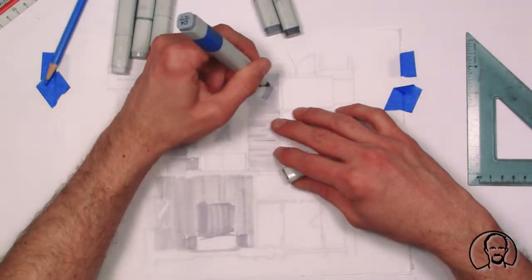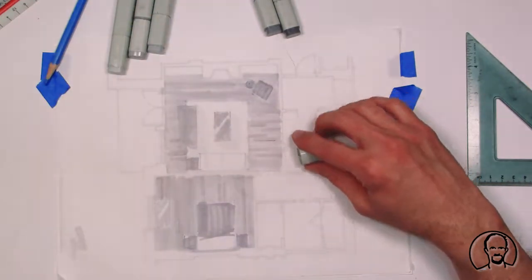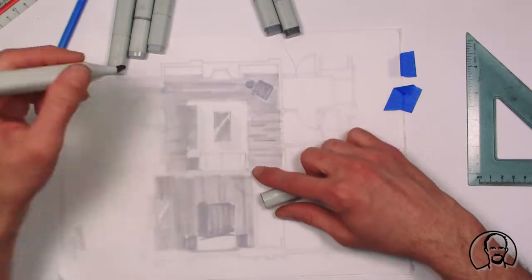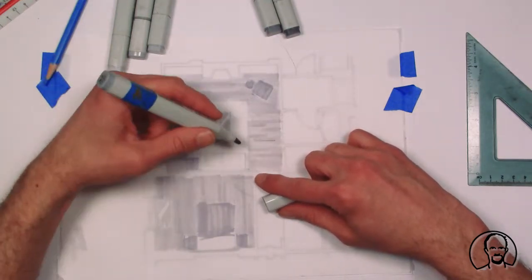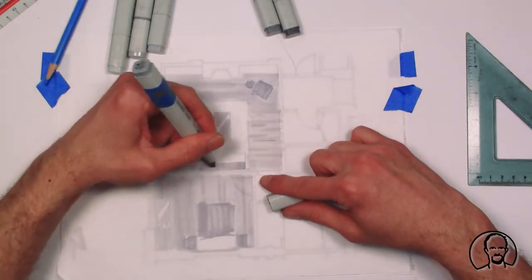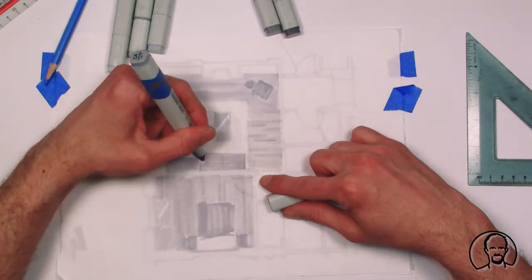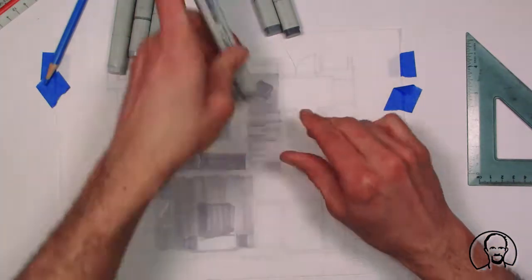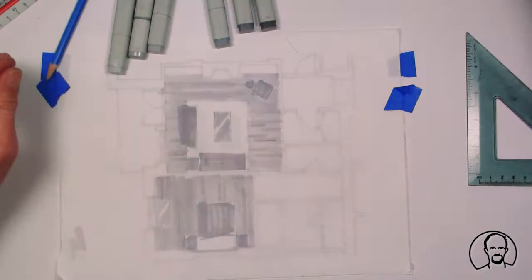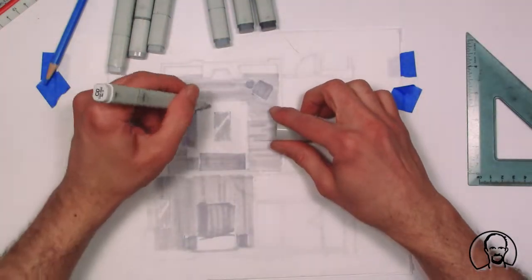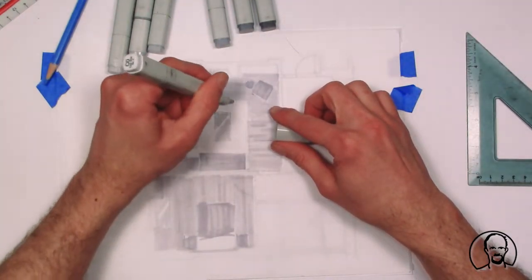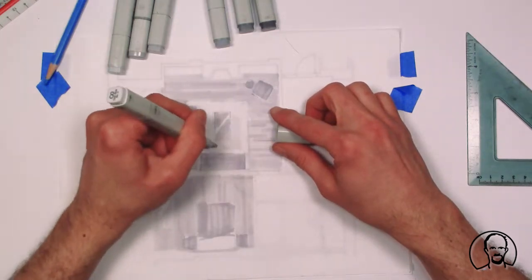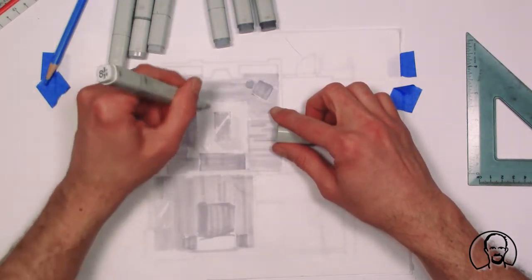So just a general color wash. You'll notice that when we do color washes quite often we start losing the shape of the objects we are rendering, so we just have to be careful. Now I'm going to use even the lightest marker that I have, this is a C0, just give me a little bit of color, but not a lot.